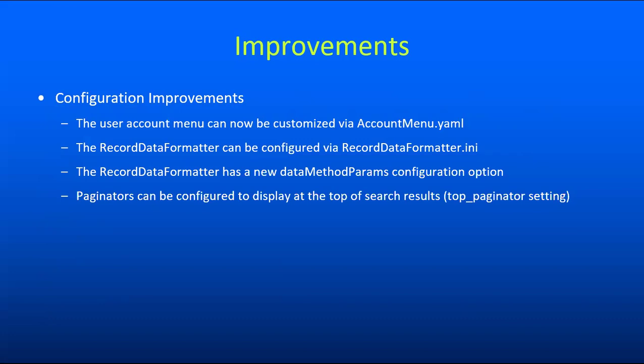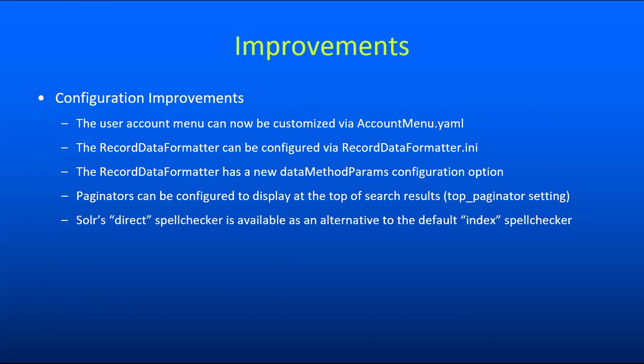We've also added some new configurations related to pagination controls. It's now possible to display the pagination control in search results at the top as well as at the bottom through the top_paginator setting. We've also added some new spell checking functionality. The Solr system offers multiple spell checking methods, and in the past we only supported index-based spell checking, but now we've added the ability to turn on Solr's direct spell checker as an alternative. Both spell checkers have different advantages and disadvantages — the main advantage of the direct spell checker is that it does not require construction of a separate spell checking index.